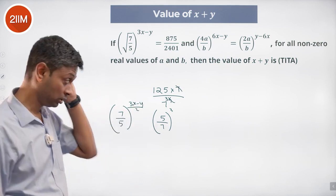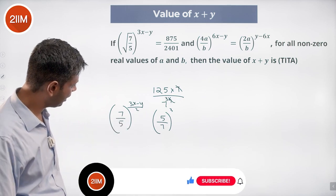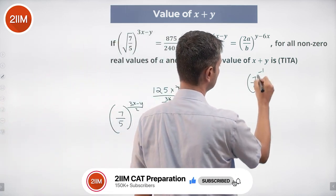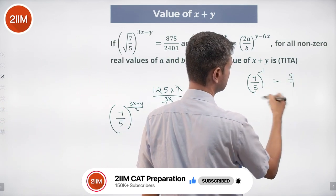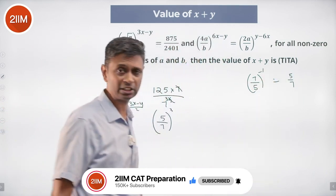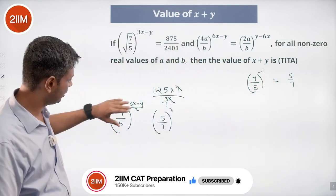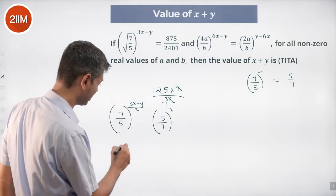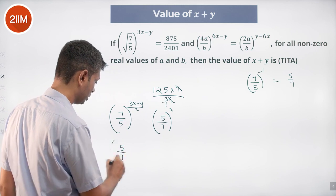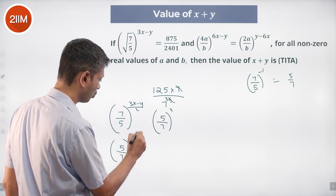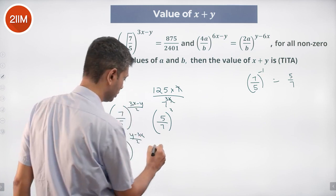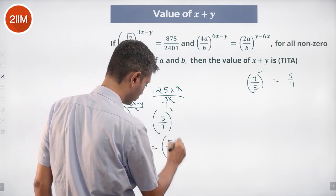So this number is 7 by 5 power... 7 by 5 power minus 1 is 5 by 7. 7 by 5 power minus 2 is 5 by 7 whole square. So this becomes minus of this and it should become equal to this. So I can rewrite this as 5 by 7 whole power y minus 3x by 2, minus of that, is equal to 5 by 7 whole cube.